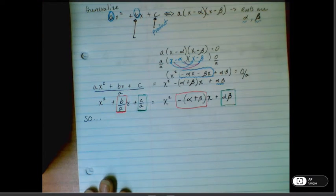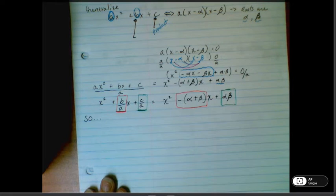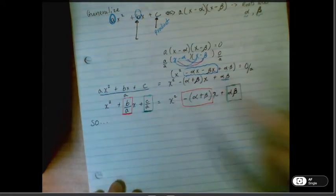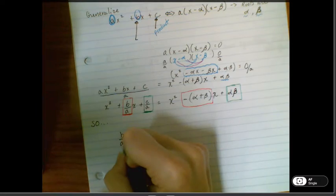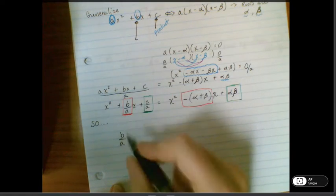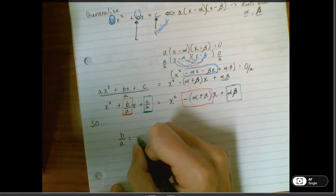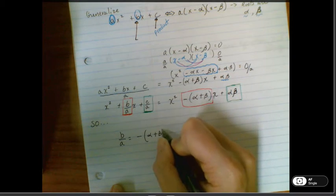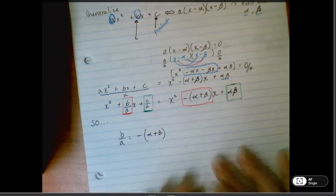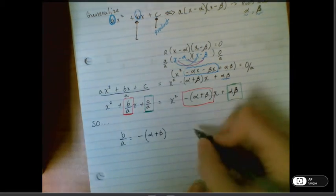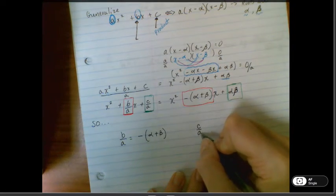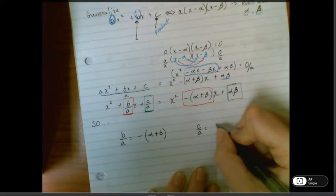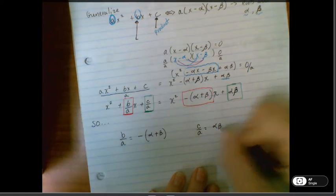So we can use that to say that b over a is equal to the opposite of the sum of the roots, and then in the green here, we can say that c over a is equal to the product of the roots.